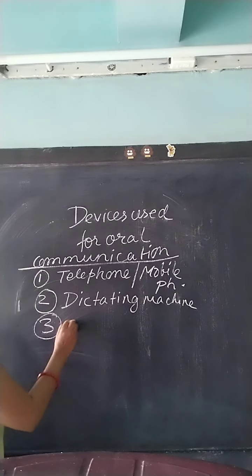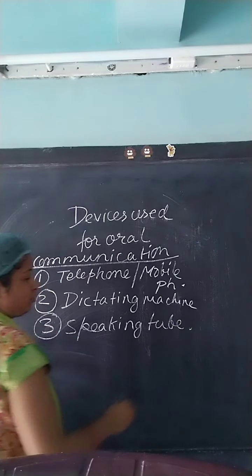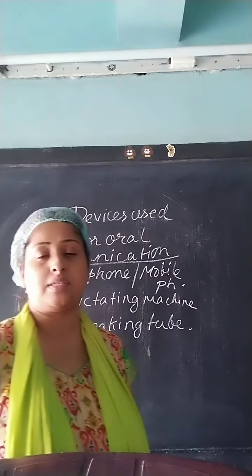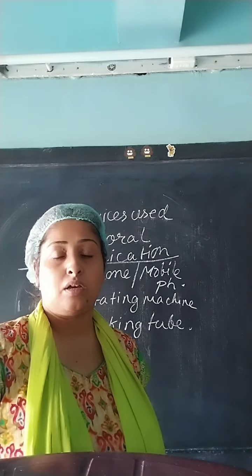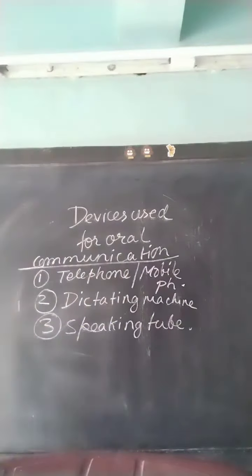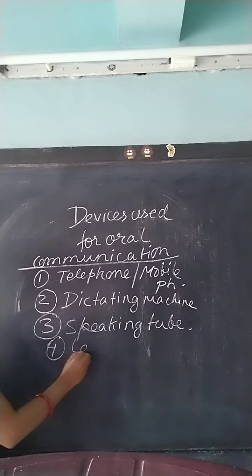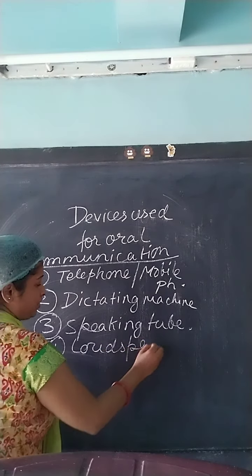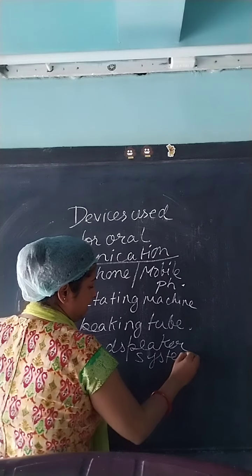The third one is the public address or speaking system. This is normally used for making any kind of announcement — in a railway station, or any announcement made by political leaders — so that it can reach the masses within a short span of time. Apart from that, there is also a loudspeaker system, which is also used to make any important announcement.